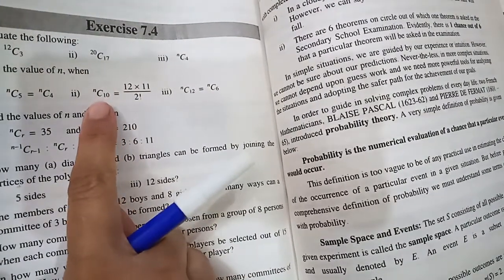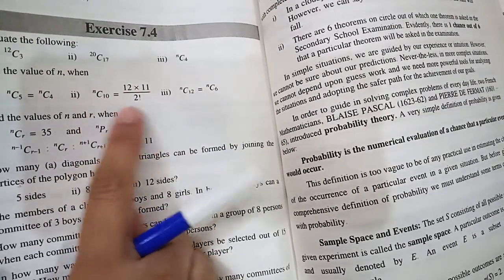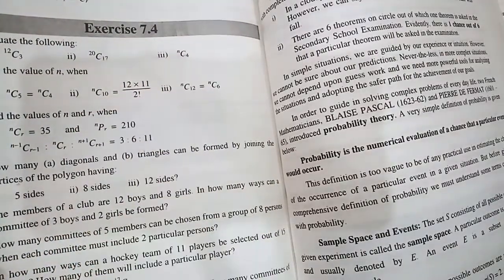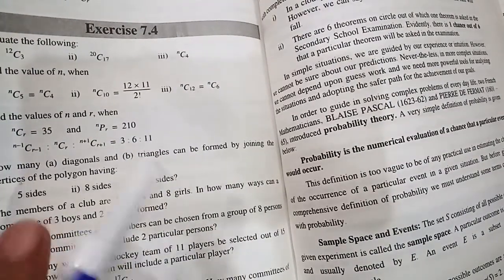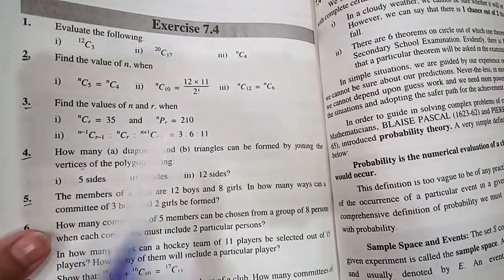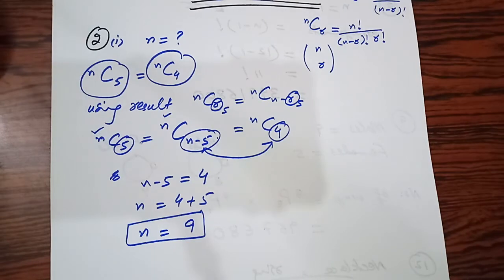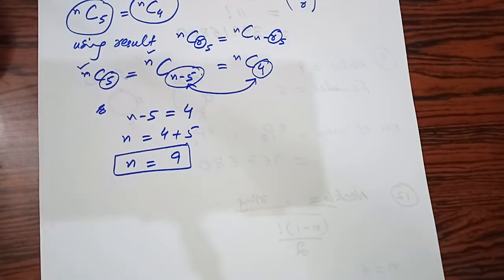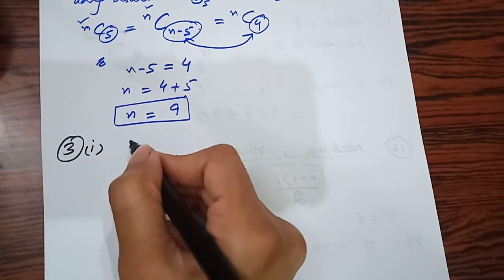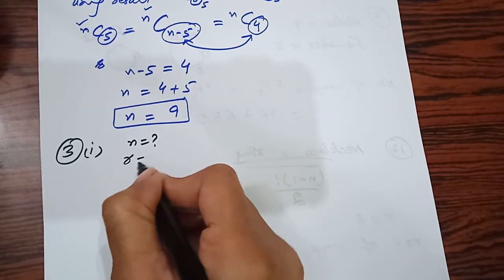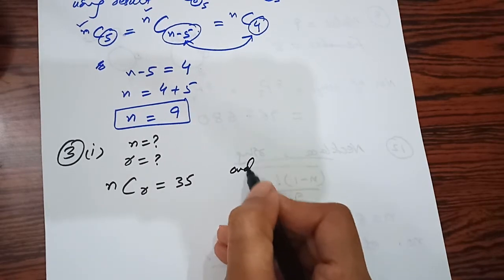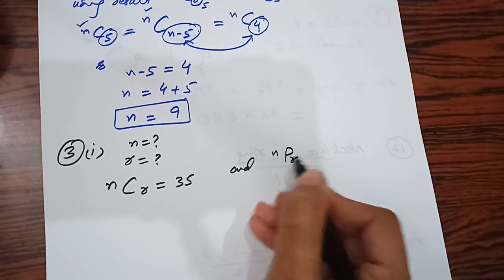Yahan pe aap formula open karenge second part mein, formula open karke us form mein banaenge. Question number 3 mein aapne n ki value aur r ki value find karni hai. Diya yeh hai: nCr = 35 aur nCr = 210.